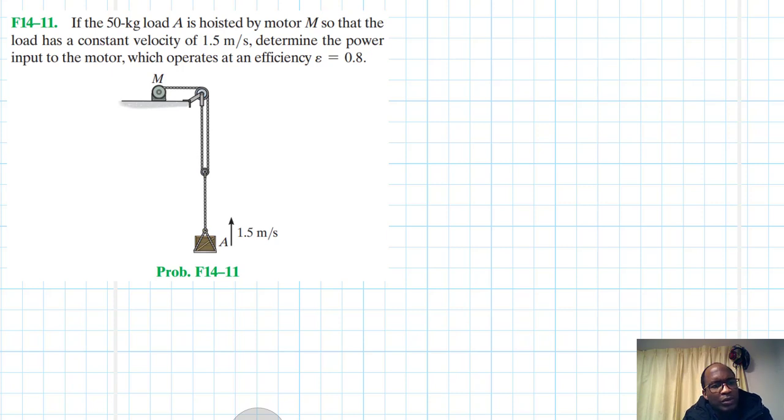Hello, I welcome you all. The problem reads: if the 50 kg load A is hoisted by a motor M so that the load has a constant velocity of 1.5 meters per second, determine the power input to the motor which operates at an efficiency of 0.08.